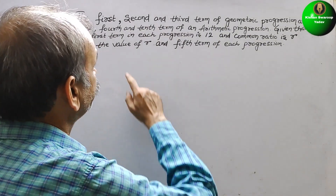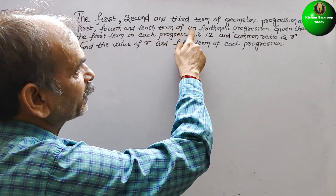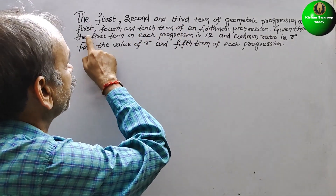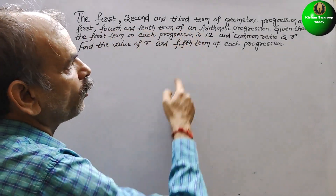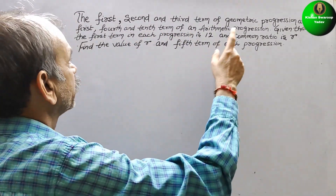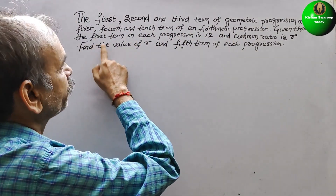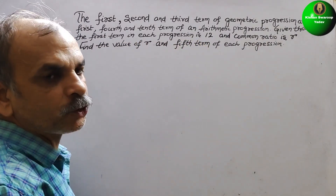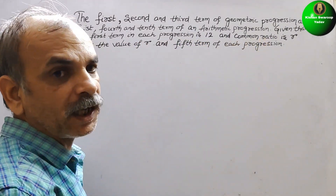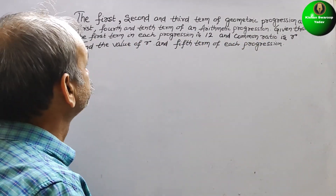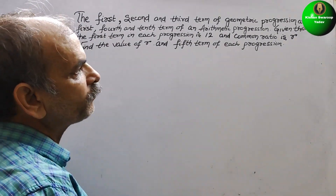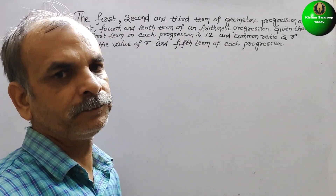The question is: the first, second and third terms of a geometric progression are the first, fourth and tenth terms of an arithmetic progression. Given that the first term in each progression is 12 and the common ratio is R, find the value of R and the fifth term of each progression.